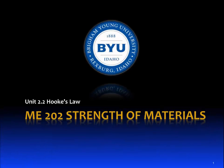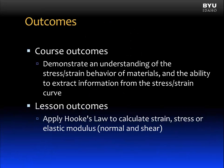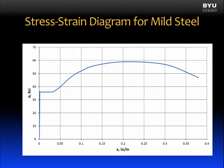Unit 2.2 Hooke's Law. The course outcome we've focused on is to demonstrate an understanding of the stress-strain behavior of materials and the ability to extract information from the stress-strain curve. This lesson's outcome is to apply Hooke's Law to calculate strain, stress, or elastic modulus for both normal and shear stress conditions. In the last lesson, we looked at the stress-strain diagram for mild steel, and we're going to look at it again.